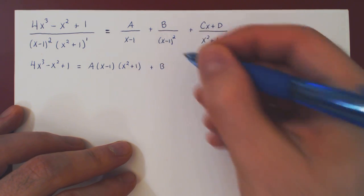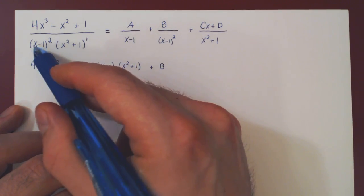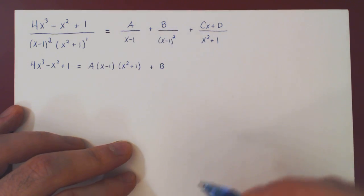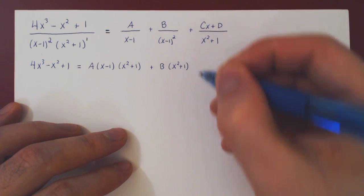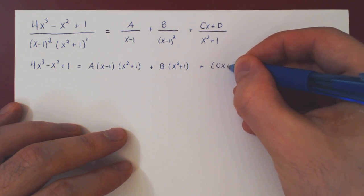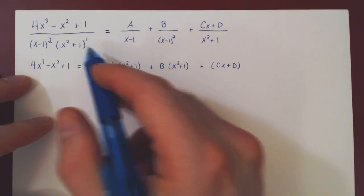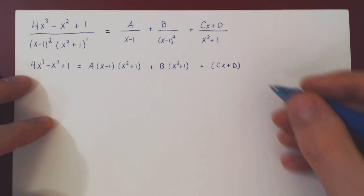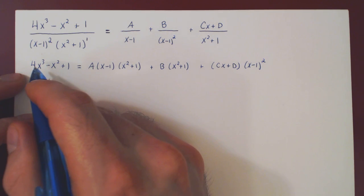Plus b: b over x minus 1 squared times the full denominator, the x minus 1 squared over itself cancels, leaving b times x squared plus 1. And finally, cx plus d over x squared plus 1 times the full denominator — the x squared plus 1 cancels — leaving cx plus d times x minus 1 all squared. Now we have our equality between two polynomials.